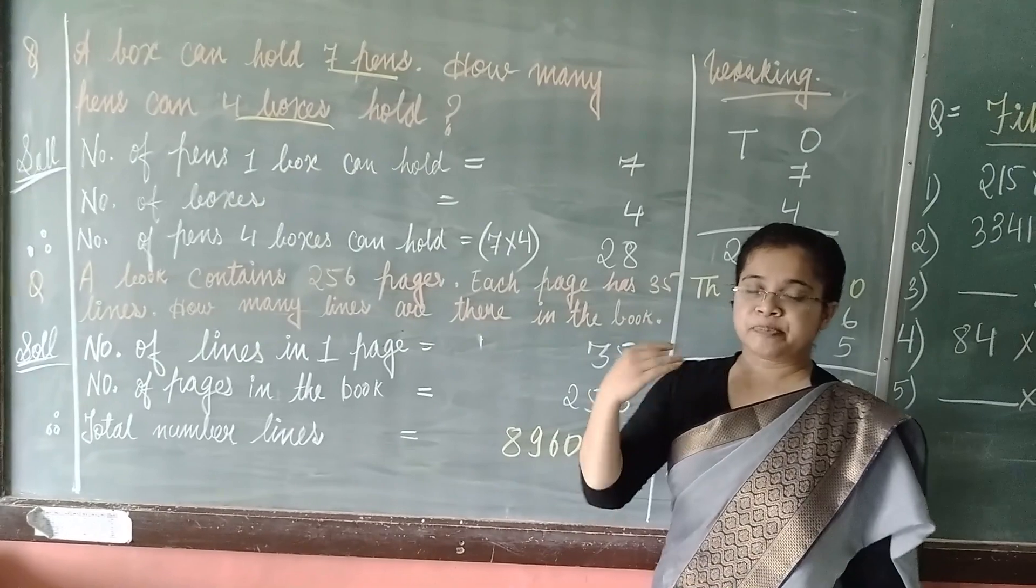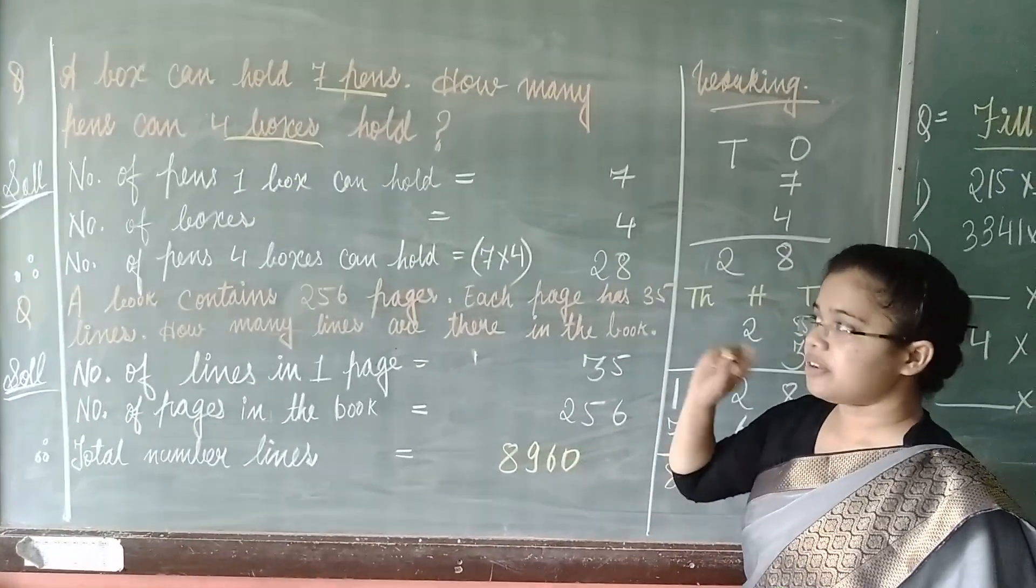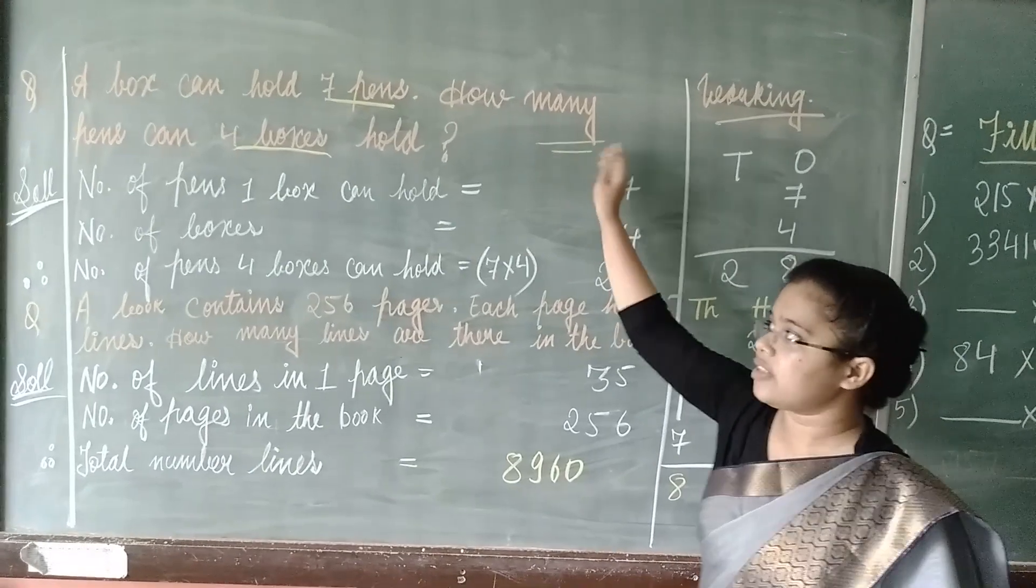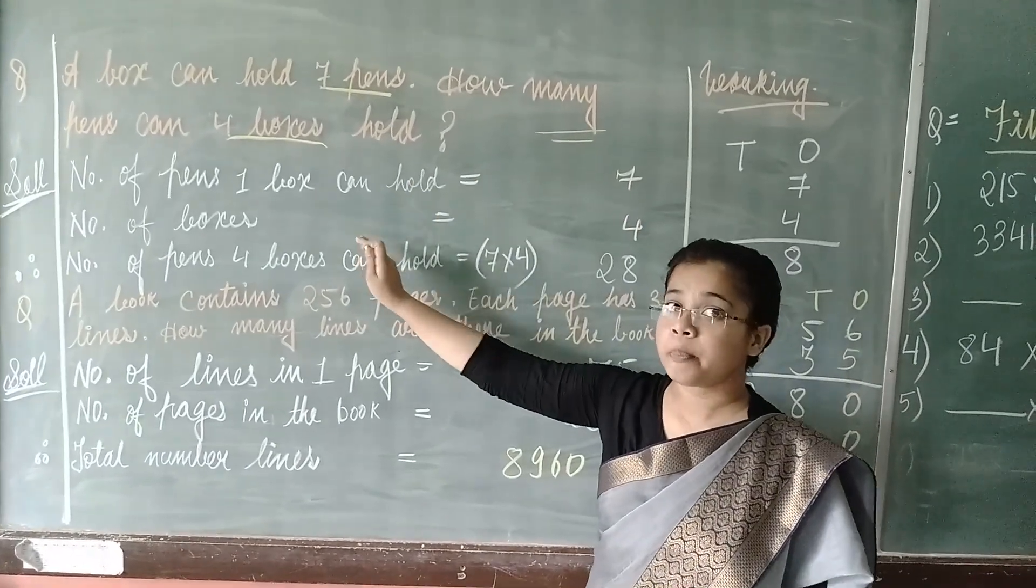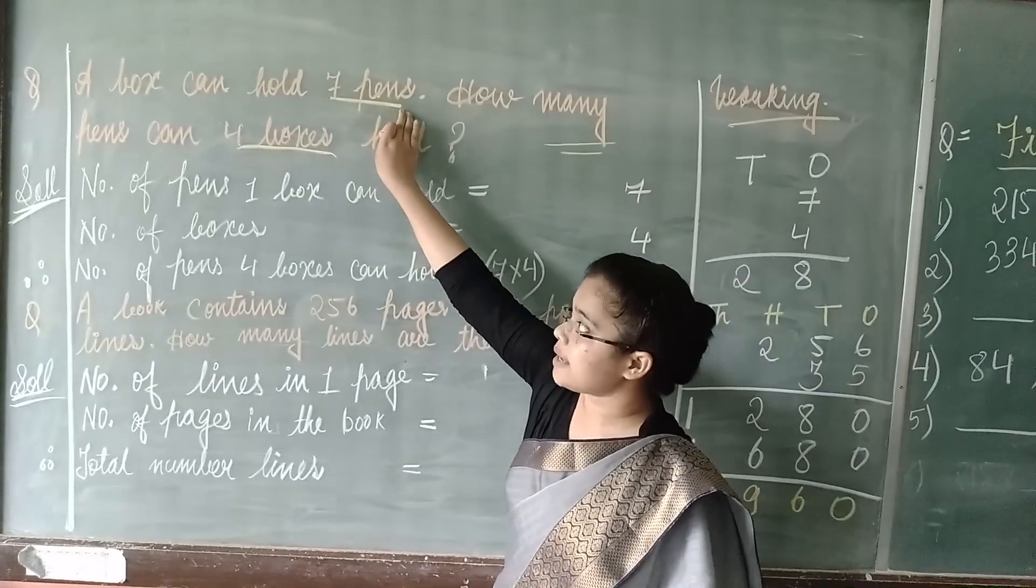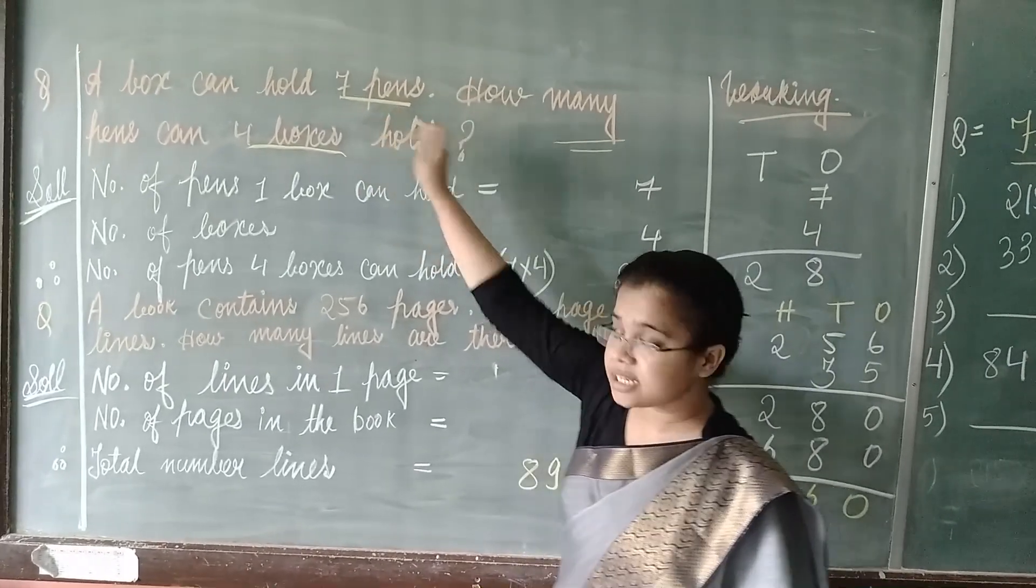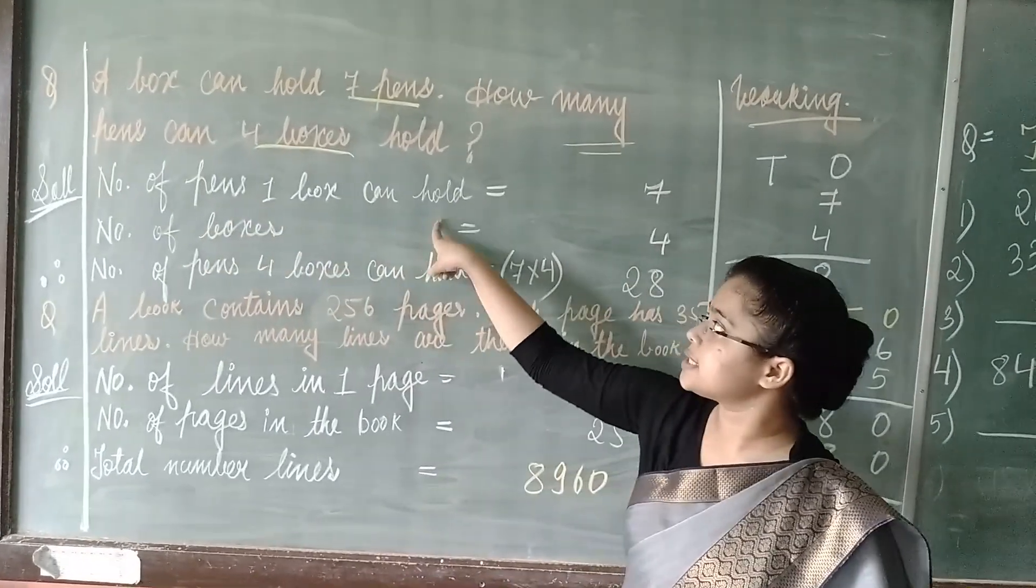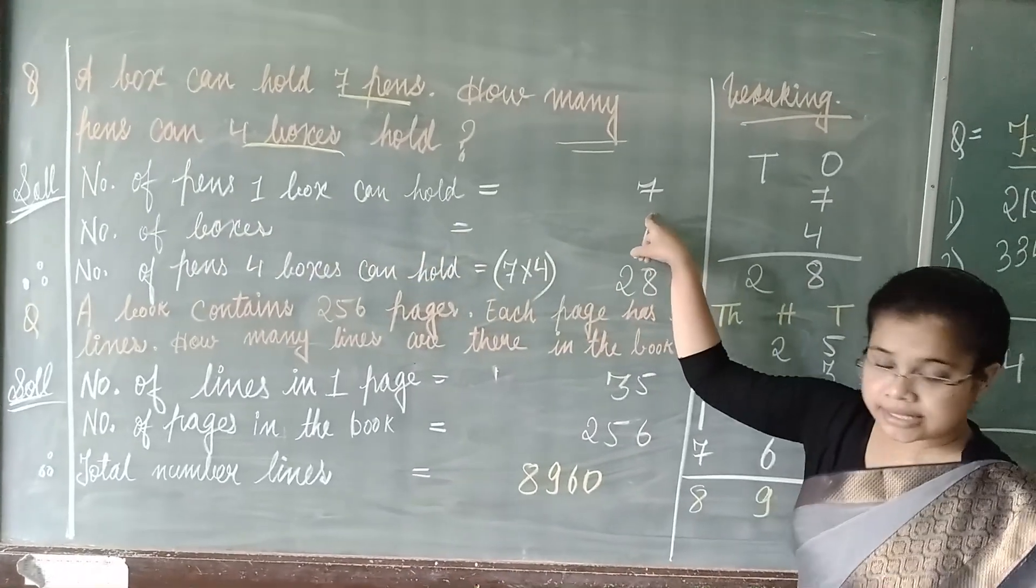As I have explained in the previous video, first of all you need to understand the question and then you have to frame a proper statement. A box can hold 7 pens. It means that there are 7 pens in a box. So, number of pens one box can hold, that is 7.